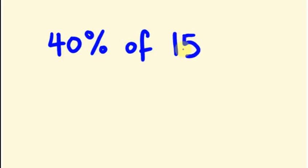Likewise, you have to make the calculation much faster. The question is 40% of 15. There is no zero on the right side, so this zero is going to get cancelled and one decimal digit is going to shift left. So 4 into 1.5 is 6.0, which is 6.